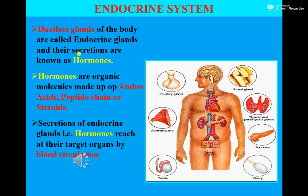Students, you have previously studied about glands. Glands are basically an aggregation of specialized cells that secrete chemical substances to perform different functions in the body. In our body, there are two types of glands: number one, the exocrine gland, and number two, the endocrine gland.